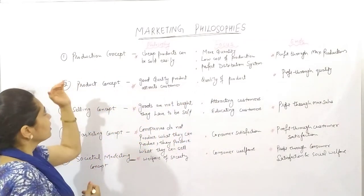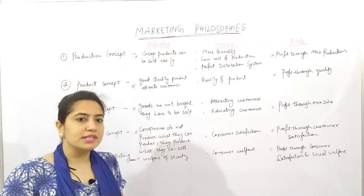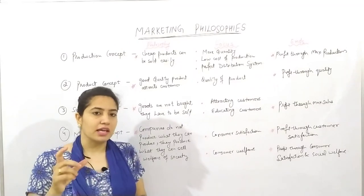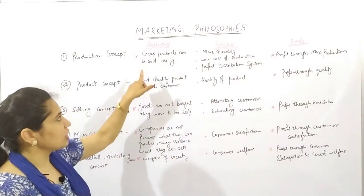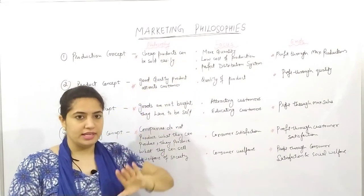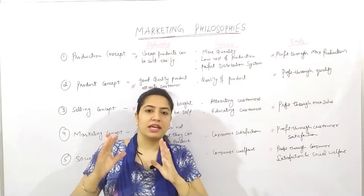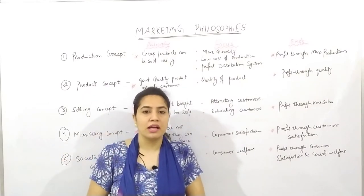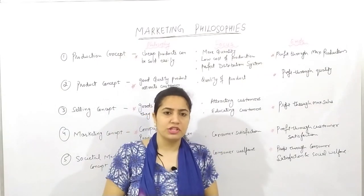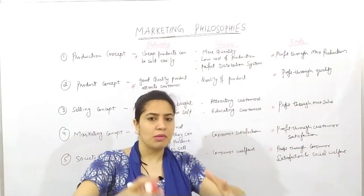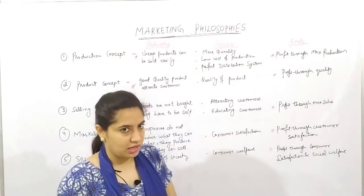Let's start. The first concept is the Production Concept. As the name suggests, this concept focused on production. The philosophy of this concept was that cheap products can be sold easily — the cheaper the product, the more it sells. This concept believed in bulk production — keep producing more and more, reduce the cost of production, and the more goods you make, the more will be sold.